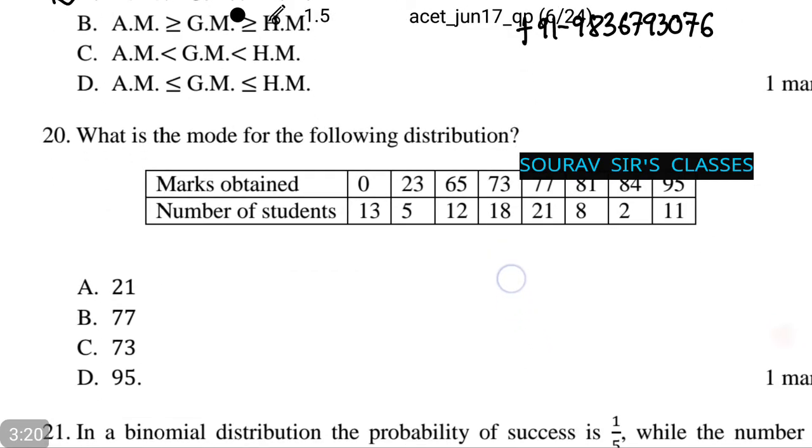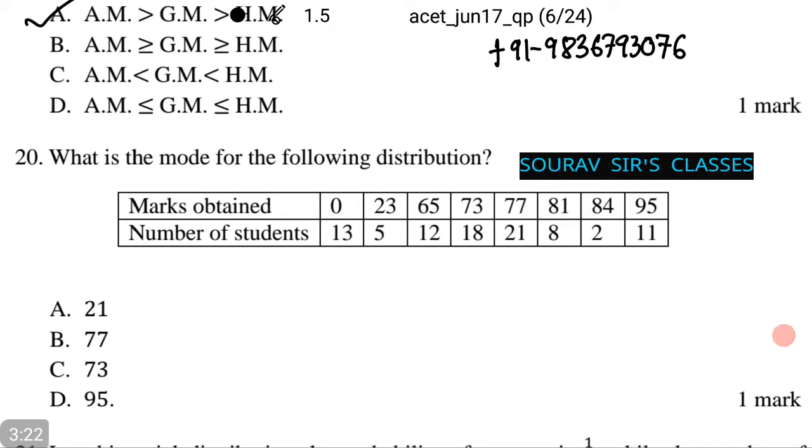This will be a fast answer. As the highest number of frequency is 21, it corresponds with number 77. The 77 corresponds to the highest frequency of 21, giving us option number B as the correct and only option.